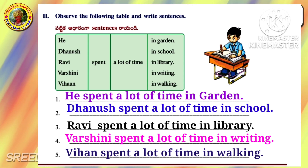Add prefix 'mis-' and write the opposite words. One is done for you. Lead: Mislead. Understand: Misunderstand. Use: Misuse. Behave: Misbehave. Fortune: Misfortune.